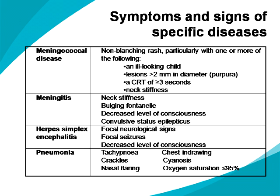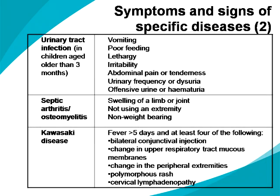For herpes simplex encephalitis: focal neurological signs, focal seizures, decreased level of consciousness. For pneumonia: tachypnoea, crackles, nasal flaring, chest indrawing, cyanosis, oxygen saturation less than or equal to 95%. For urinary tract infection in children aged older than 3 months: vomiting, poor feeding, lethargy, irritability, abdominal pain or tenderness, urinary frequency or dysuria, and offensive urine or haematuria.